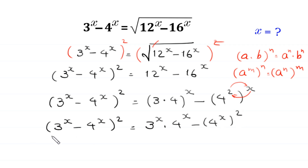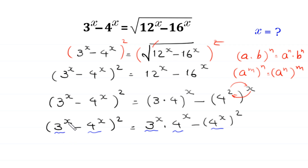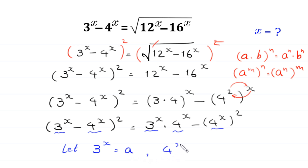Now we notice we have 3 to the power x and 4 to the power x appearing repeatedly. So we let 3 to the power x equal a, and 4 to the power x equal b.